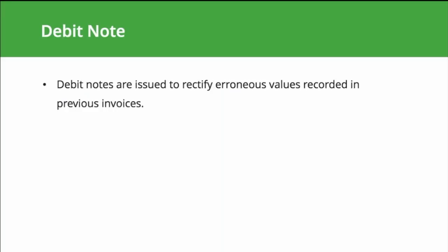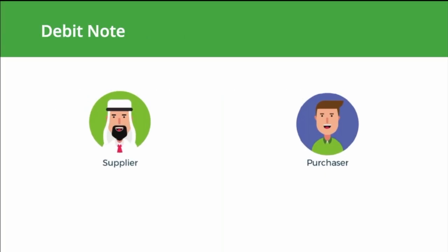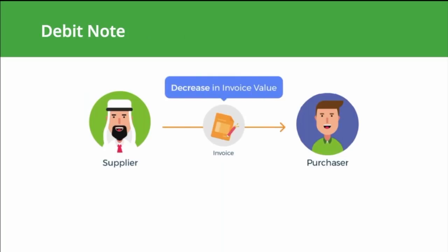Debit notes are usually issued to rectify erroneous values recorded in previous invoices. For example, if a product costs 450 dirhams and the invoice is wrongly recorded as 400 dirhams, a debit note of 50 dirhams is issued by the supplier. A debit note is issued when the recipient owes the supplier — typically when the tax amount or the taxable value of the supply mentioned in the invoice is less than the actual amount.